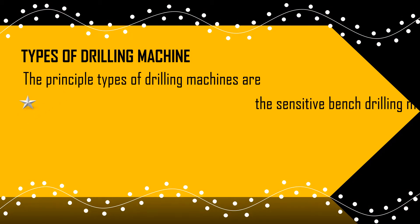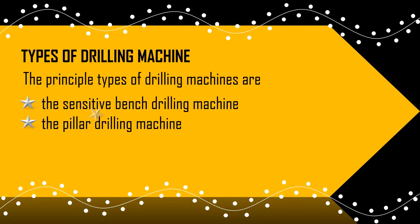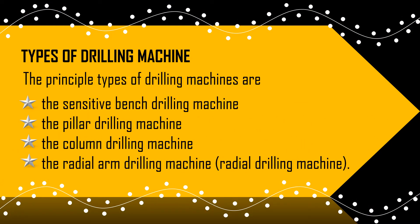Let's see what are the types of drilling machine. The principal types of drilling machines are: the sensitive bench drilling machine, the pillar drilling machine, the column drilling machine, and the radial arm drilling machine or radial drilling machine.